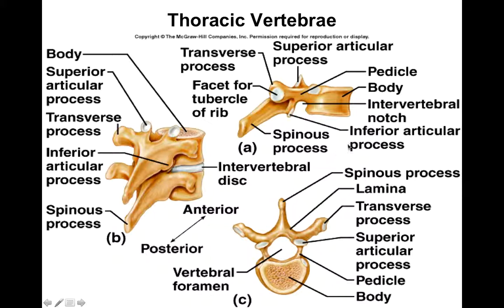Thoracic vertebrae — there are 12 of them. The best way to tell the thoracic vertebrae from the others is that the spinous process of the thoracic vertebrae have a more downward orientation, whereas the others have a more straight-out orientation. The thoracic vertebrae also have facets for the ribs, and these facets are where the ribs articulate posteriorly. Each thoracic vertebra is the posterior articulation for the ribs — rib one articulates with T1, rib two with T2, and so on.